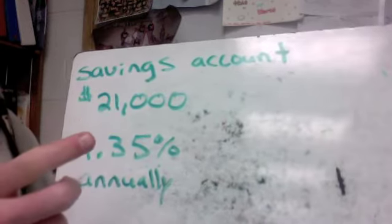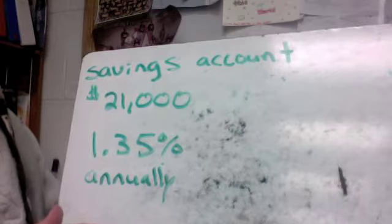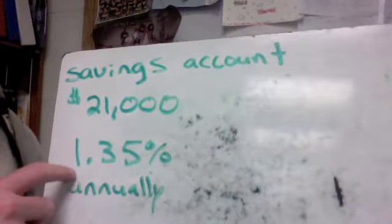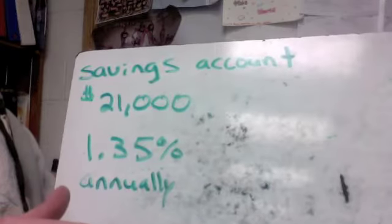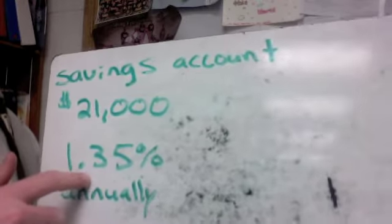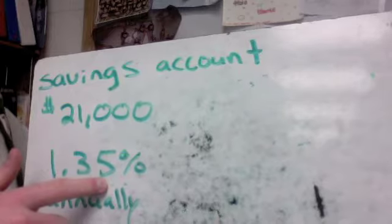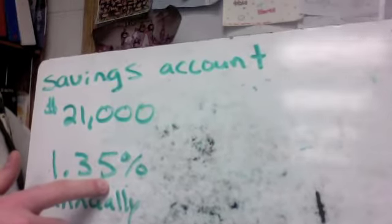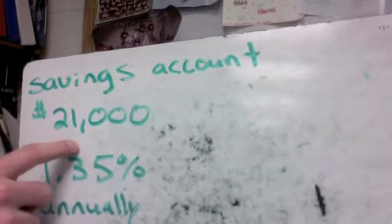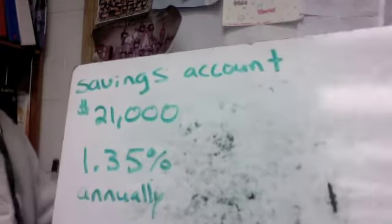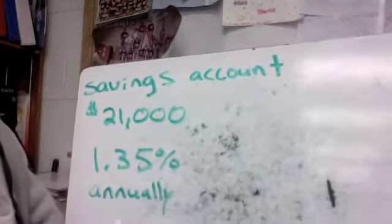Now, here's the thing that gets a lot of people. This doesn't have to do with percent of a number, but it's something to keep in mind. This percent they put on a savings account, that's for the entire year. If I made 1.35% every month, that might be an extra couple hundred dollars every month. That's not how it works. Annually means every year.